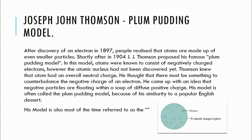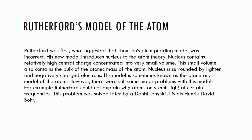Thomson discovered the electron, and knowing that the atom is neutral and has negatively charged particles, he concluded there must also be positive charge particles, giving the atom as a whole both positive and negative charge. However, the nucleus had not yet been discovered. This model is referred to as the plum pudding model or the watermelon model.